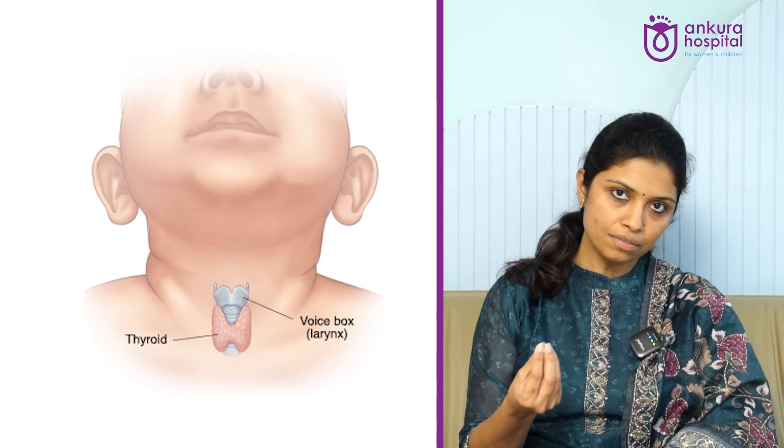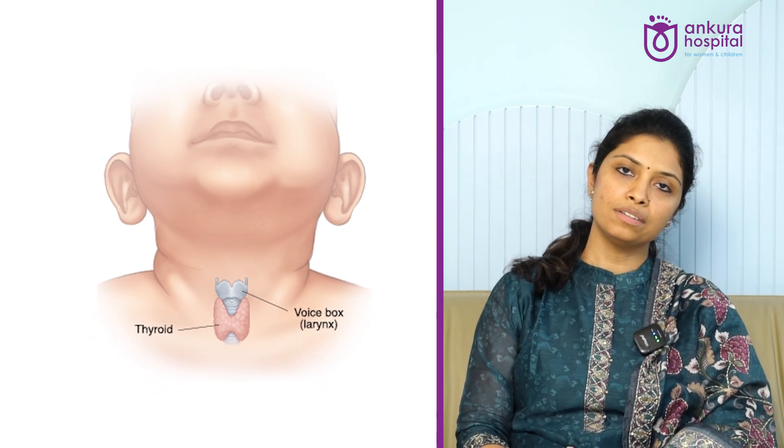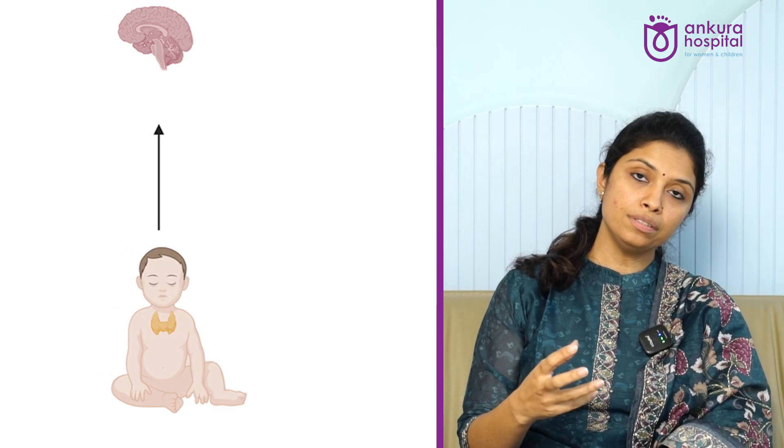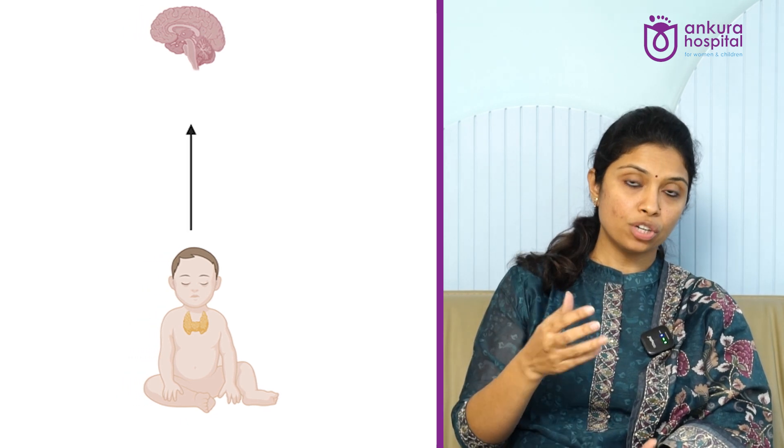The thyroid gland is a butterfly-shaped gland situated in front of the neck. It releases two important hormones, T3 and T4, which have important functions in the body — to monitor growth, to take care of body metabolism, and especially in newborn babies, to take care of the development of the neurons of the brain. Thyroid is a very important hormone for brain development in the early years of life.